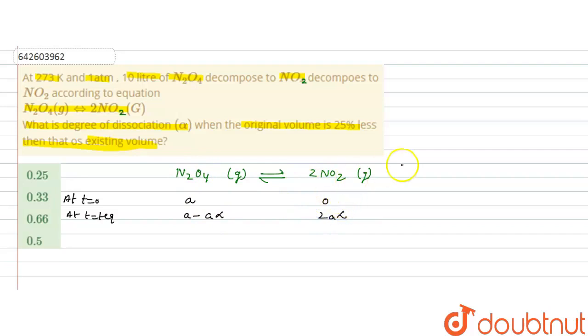If we calculate the total number of moles at equilibrium, that would be A minus A alpha plus 2A alpha, which equals A plus A alpha, or A times 1 plus alpha if you take A common.